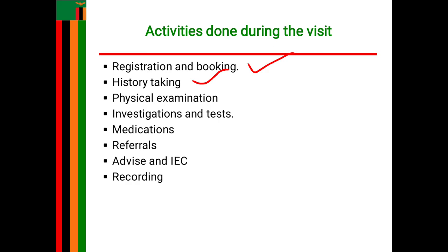You also get medication history. You ask the woman if she is on any long-term medications, for example antiretroviral therapy, antihypertensives, antimalarials, or antidiabetic drugs. That covers the information collected under history taking.